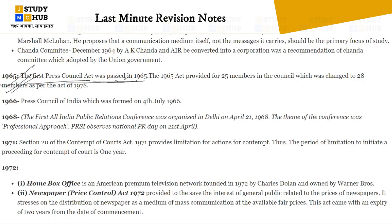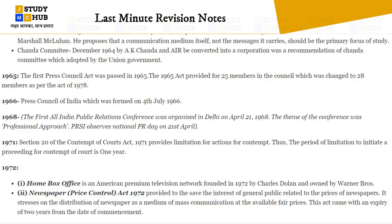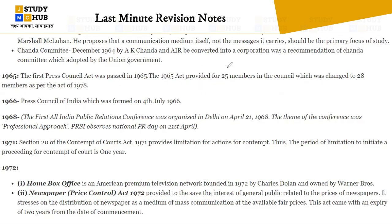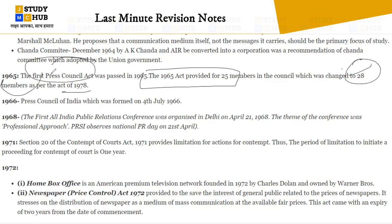In 1965, the first Press Council Act was passed, providing 25 members in the council. This was changed to 28 members in 1978. Please note: 1965 — 25 members; 1978 amendment — 28 members. Do not confuse the Press Council Act of 1965 with the Press Council of India, which was formed in 1966.